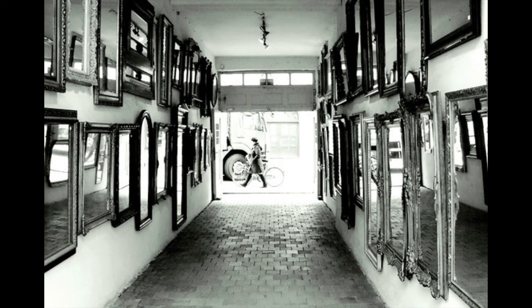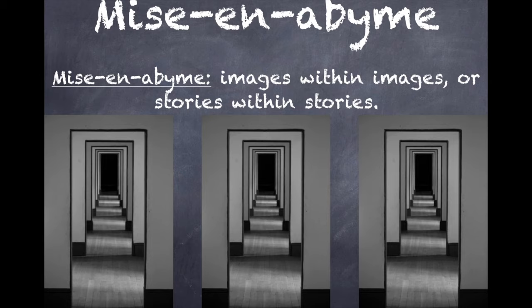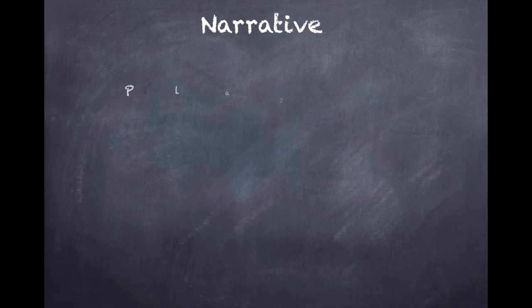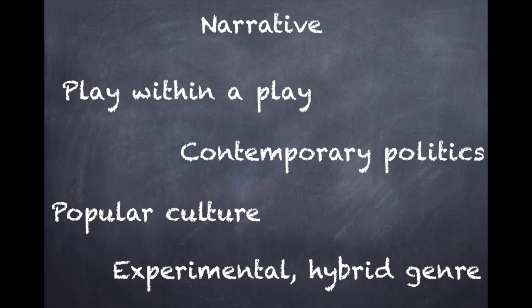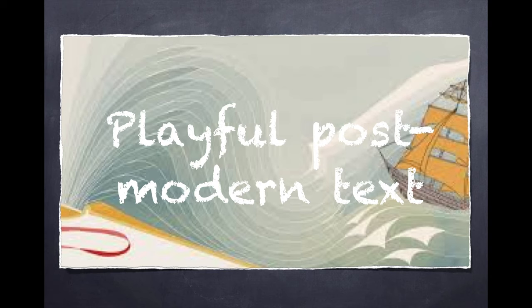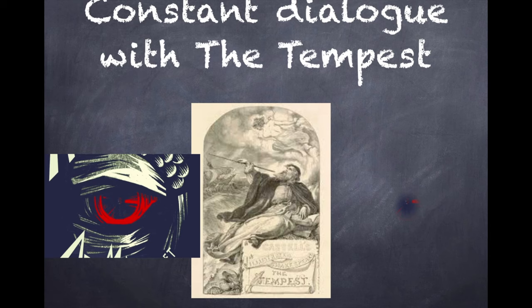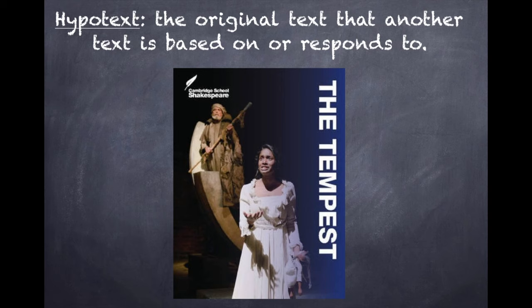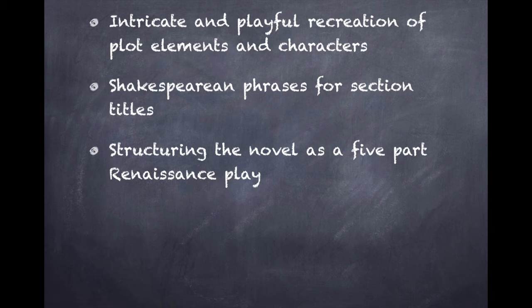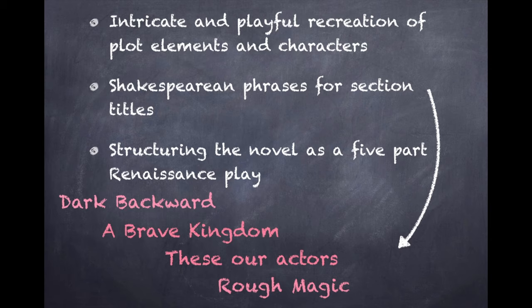Abrams described Hag-Seed as a veritable hall of mirrors. An example of mise en abyme, Hag-Seed is a narrative that contains a play within a play. It embeds contemporary politics, popular culture, rap and experiments with genre. It is a playful postmodern text that provides multiple possible endings. Hag-Seed is in constant dialogue with the Shakespearean original text, or hypotext. Atwood's use of intertextuality is taken far beyond the intricate recreation of plot elements and characters, to the use of Shakespearean phrases for section titles and indeed the entire structuring of the novel as a Renaissance play.